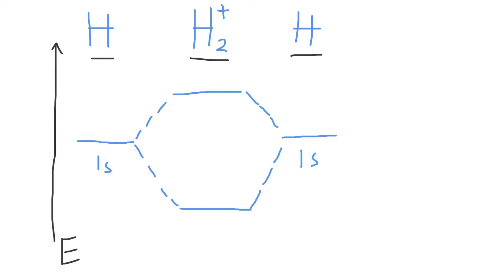The molecular orbital that is lower in energy is a bonding molecular orbital called the sigma 1s molecular orbital, and the one that is higher in energy is an antibonding molecular orbital called the sigma 1s star molecular orbital.